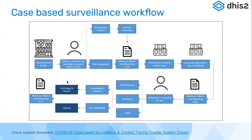Now, let's quickly go through the workflow used in the case-based surveillance program. A patient attends a health facility and is screened and identified as a suspect COVID-19 case. Based on that, the patient is either hospitalized or put into isolation and receives treatment, and details are filled in the case reporting form. If the patient is not hospitalized, details are still filled into the case reporting form. A lab request is made to confirm whether the person is a confirmed COVID case, and the lab result determines if the case is confirmed.